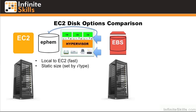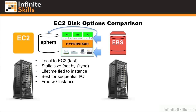Generally, the larger instance you get, the larger ephemeral disk you get. Its lifetime is tied to the instance itself — there's no way to stop the ephemeral and store it off somewhere. It's optimized for sequential I/O, it comes free with your instance, and the user has to provision it. Amazon did this because many users saw the disk just laying there and started using it, then got very angry when their machine crashed and there was no way to get that data back. So Amazon decided that if you're going to shoot yourself in the foot, you have to load the gun — you have to provision the ephemeral disk when you spin up your instances.